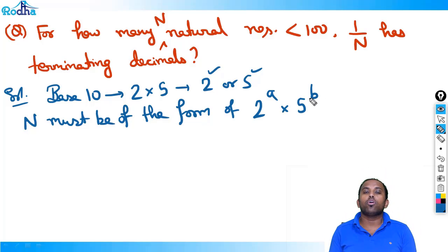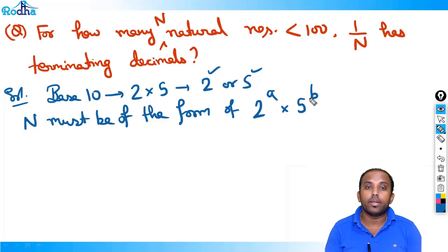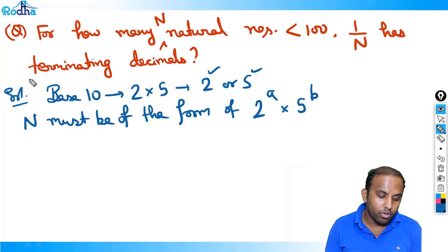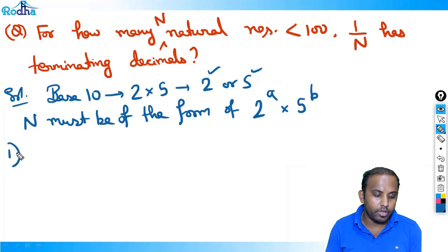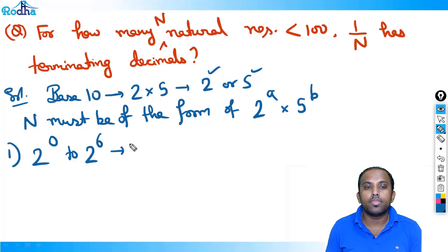Because 1/n has terminating decimals, n has to contain 2 or 5 or both. So n is of the form 2^a × 5^b. Counting how many such numbers are below 100: first, all powers of 2 from 2^0 to 2^6 — that's 7 values (since 2^6 = 64 < 100, and 2^7 = 128 > 100).